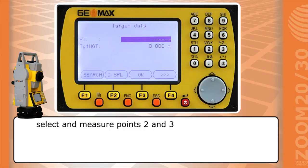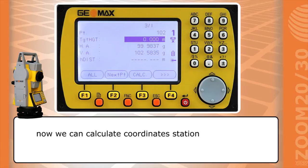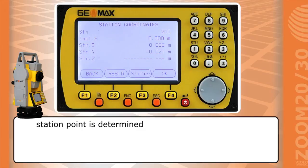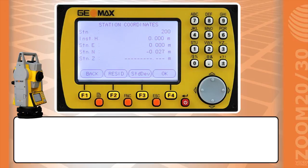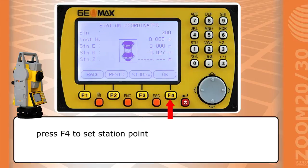Select and measure point 2 and 3. Now we can calculate coordinate station. Press F3. Station point is determined. We can check the standard deviation by F3. Press F4 to set station point.